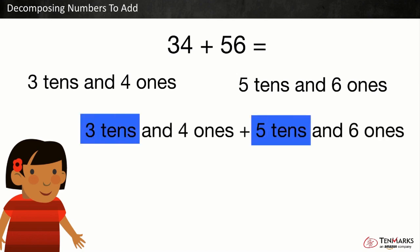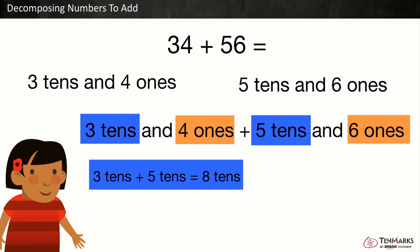We can add all the tens first then the ones. Three tens plus five tens is equal to eight tens and four ones plus six ones is equal to ten ones.